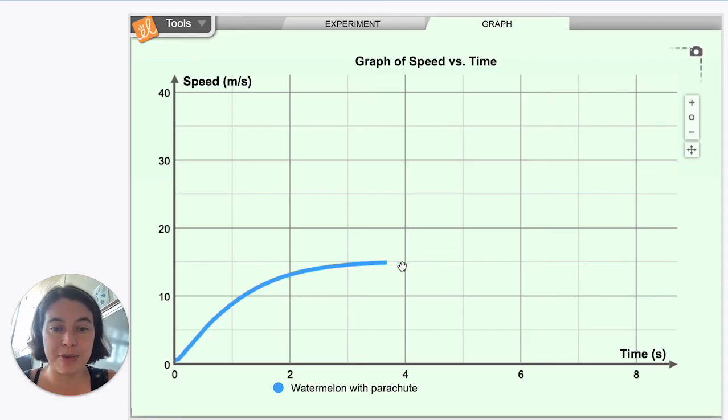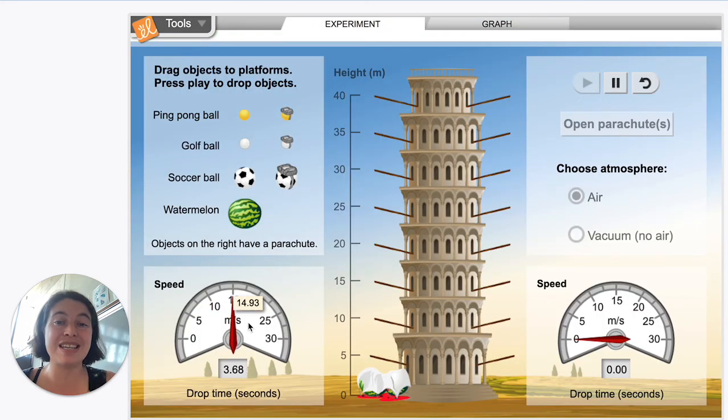Maybe hadn't even quite reached terminal velocity. But it seems like the terminal velocity of a watermelon with that parachute is about 14.93 meters per second. So 14.93 for the watermelon.